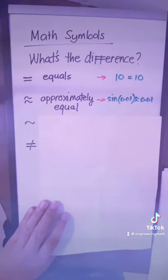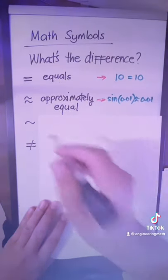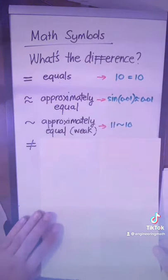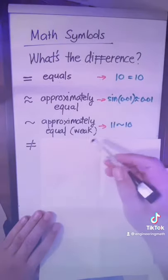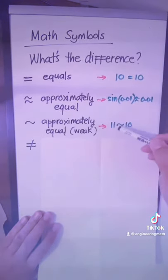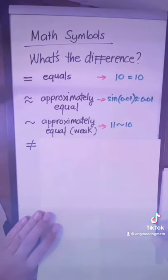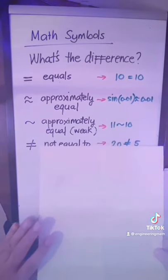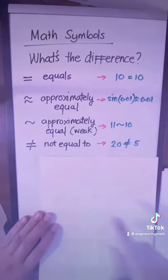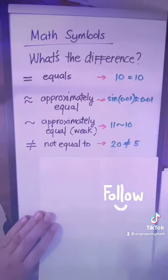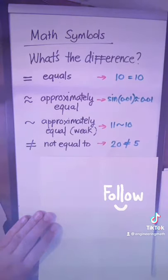The third one is also approximately equal. However, it is much weaker — for instance, 10 is approximately equal to 11. And the last one is of course not equal to. For example, 20 is not equal to 5. Follow for more.